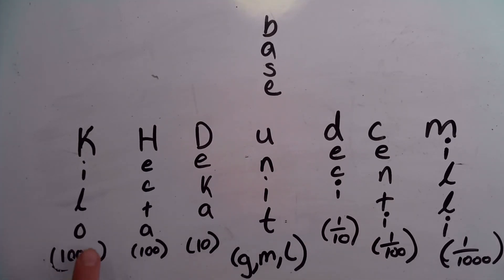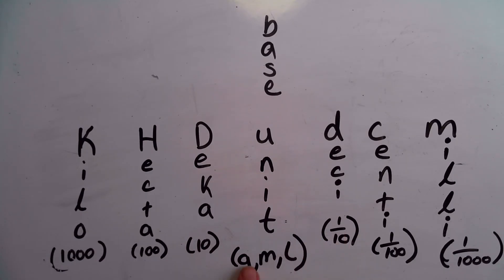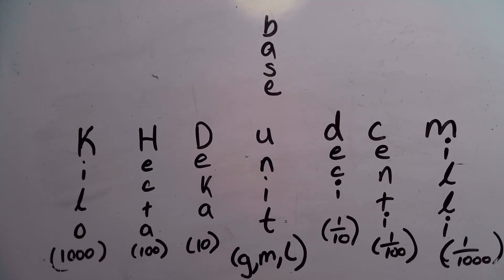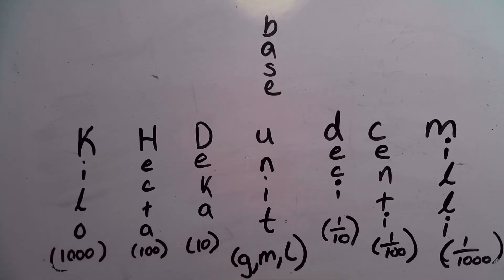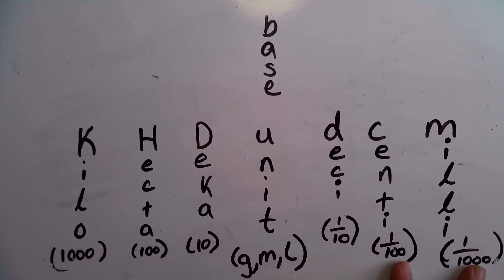The major value of knowing the order of these prefixes is going to be to help you convert between them. Frankly, you very rarely hear people use the word hectometers or decaliters or decigrams — they're not phrases you typically hear. However, I'm teaching them to you here because it's going to be very useful when we're trying to convert between, say, how many millimeters are in a kilometer, or how many centigrams are in a gram. If you watch our next video, you will see how to use this memory tool to convert between units.